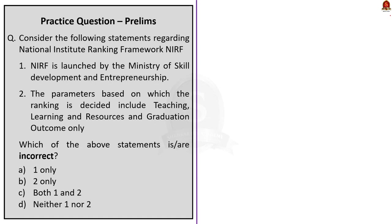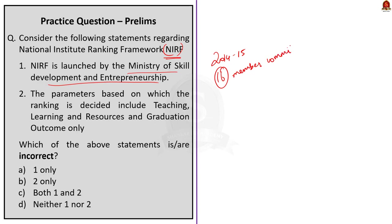The first question is a two-statement question regarding the National Institute Ranking Framework, shortly known as NIRF. Statement one says NIRF is launched by the Ministry of Skill Development and Entrepreneurship — this statement is incorrect. The National Institute Ranking Framework was evolved during 2014-15, and the ranking is given by a 16-member core committee appointed by the Ministry of Education. So it is released by the Ministry of Education, not the Ministry of Skill Development and Entrepreneurship.